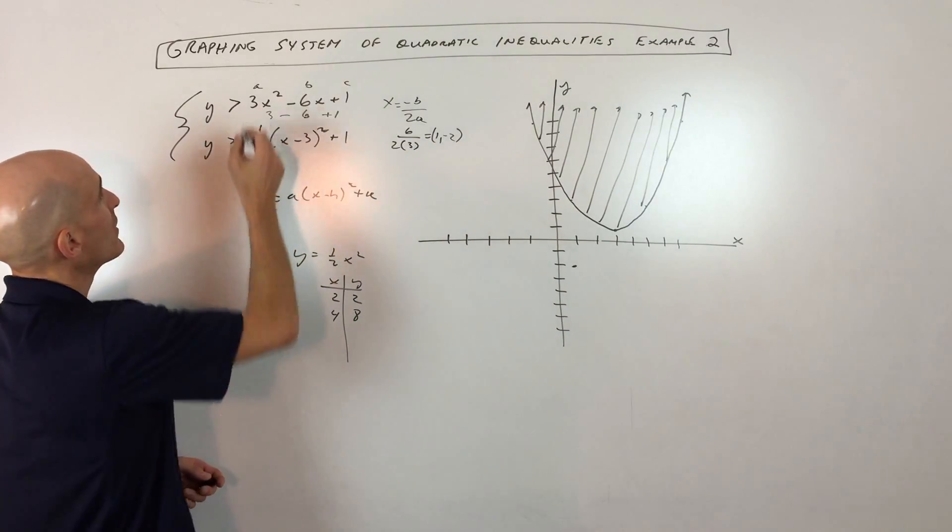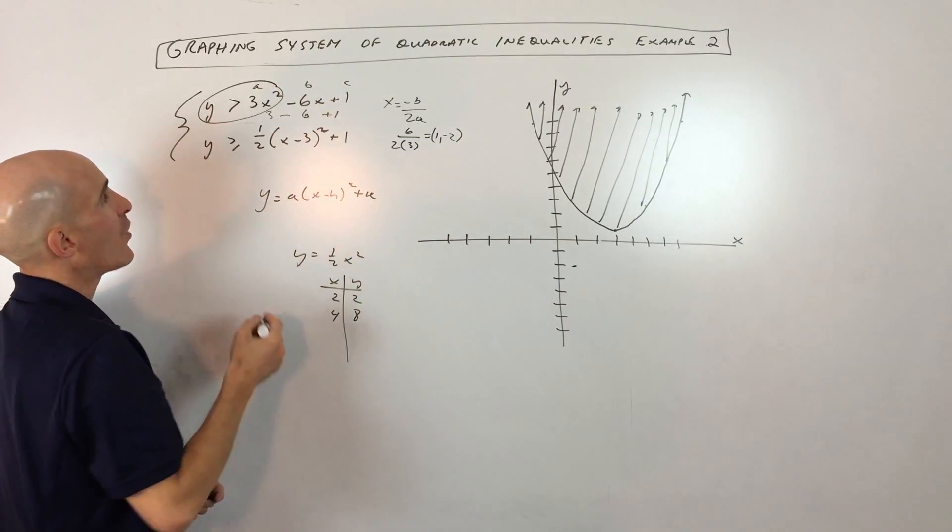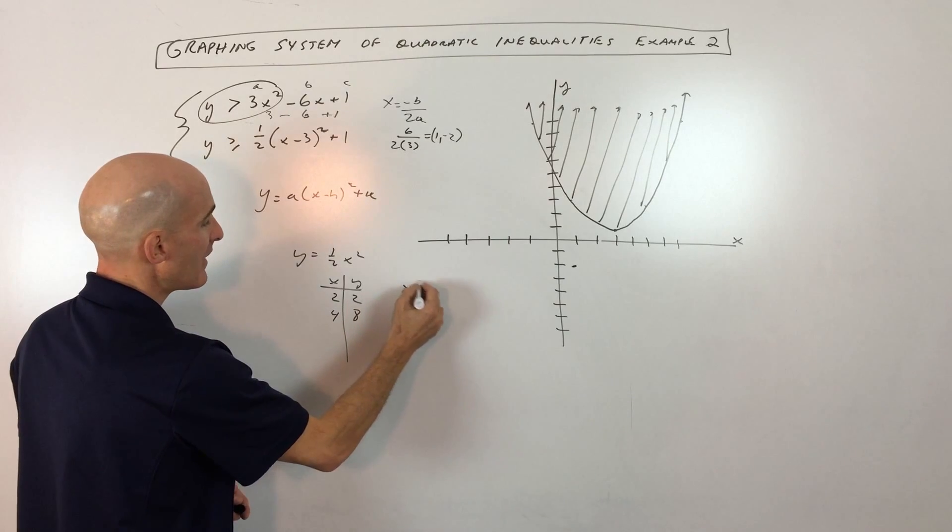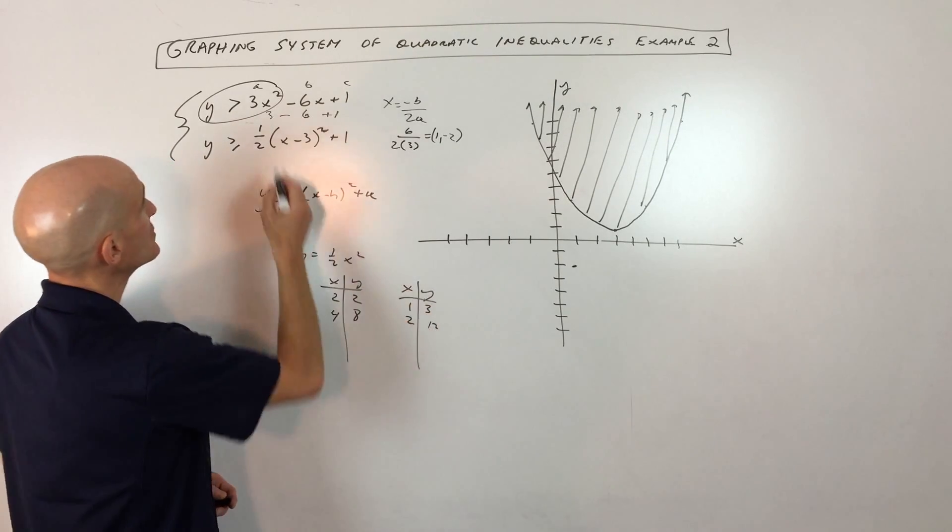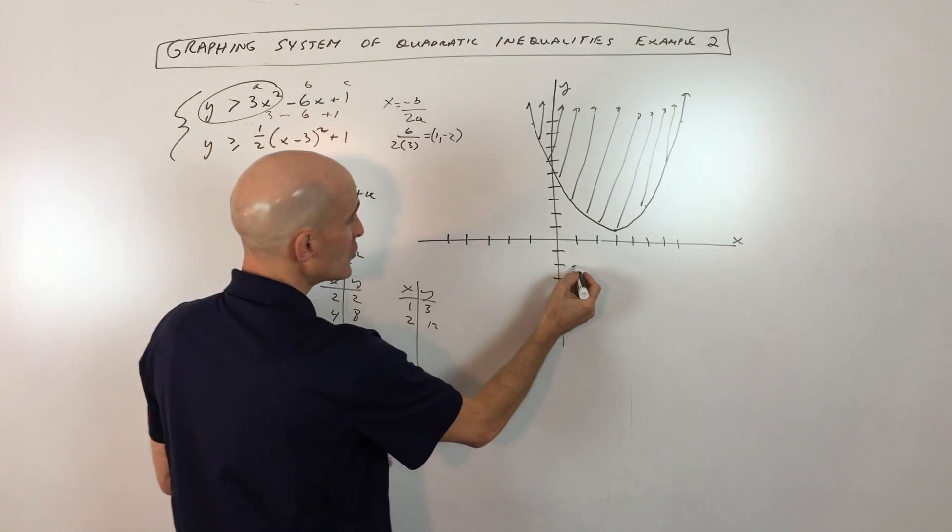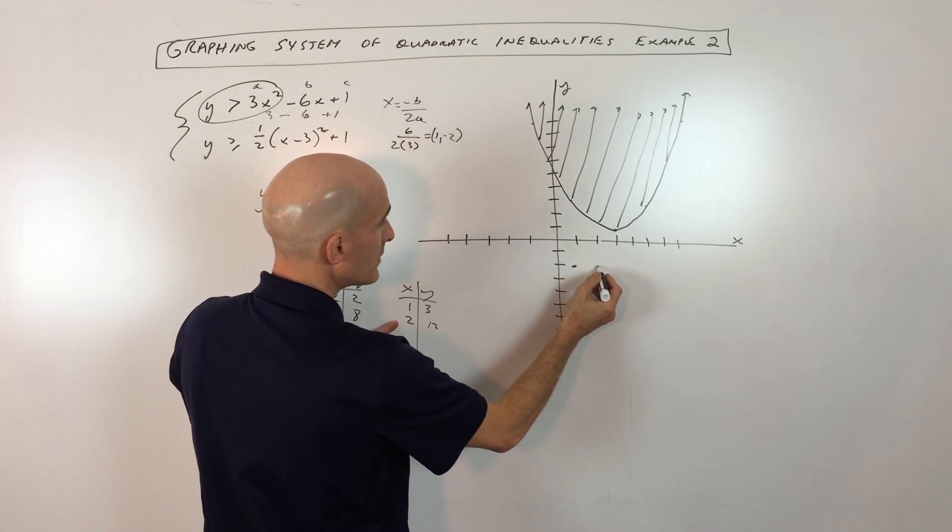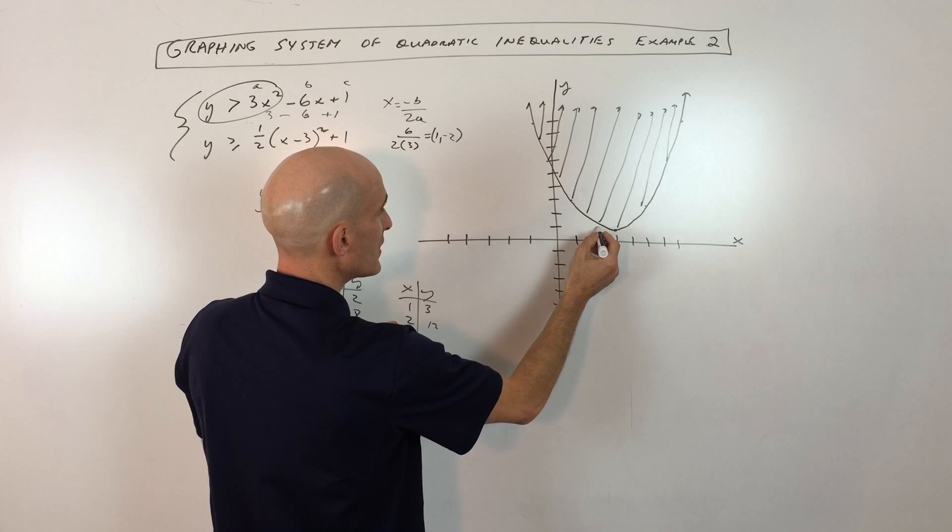And if we want to look at the parent function, y equals 3x squared, we can do a table on that. We get 1, 3, and 2, 12. So I'm just putting 1 in for x. So what I'm going to do is from this point, I'm going to go right 1, up 3, 1, 2, 3. And I can do the same thing on the other side since it's symmetric.